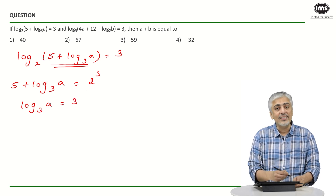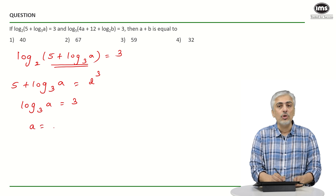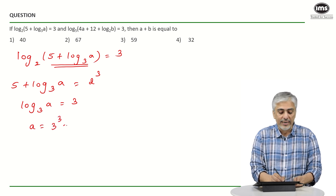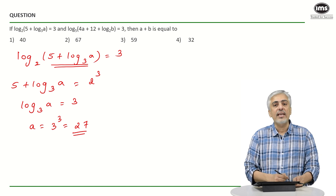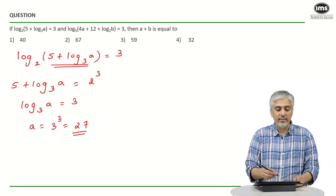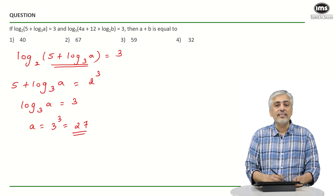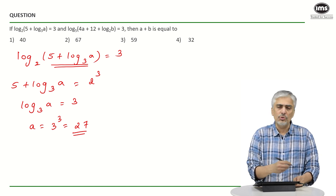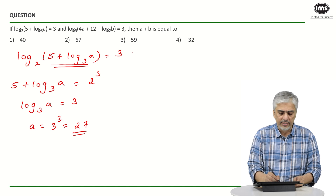Again using the same property — converting logs to indices — a = 3³ = 27. So we've got the value of 'a' already. Now let's look at the second equation and substitute the value of a.